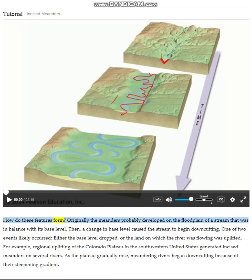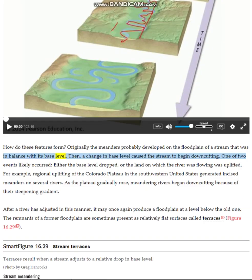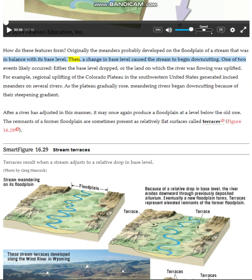How do these features form? Originally the meanders probably developed on the floodplain of a stream that was in balance with its base level. Then a change in base level caused the stream to begin downcutting.